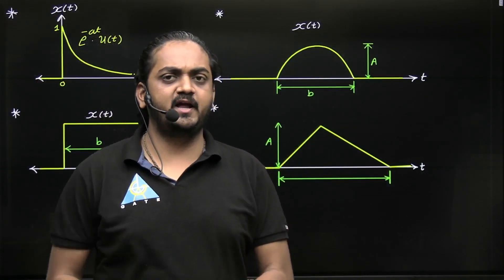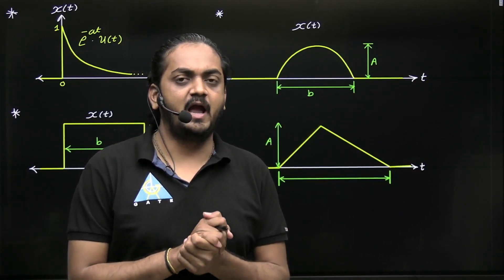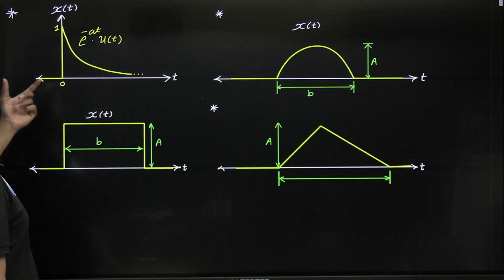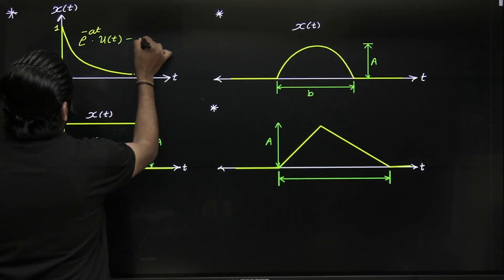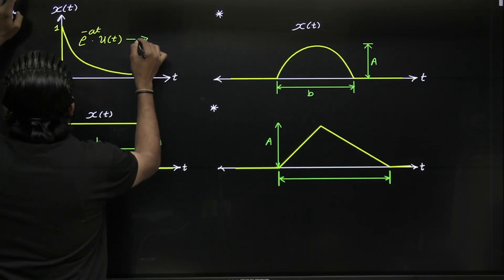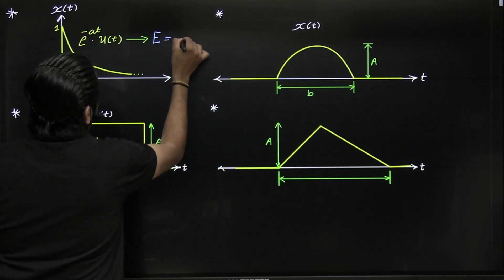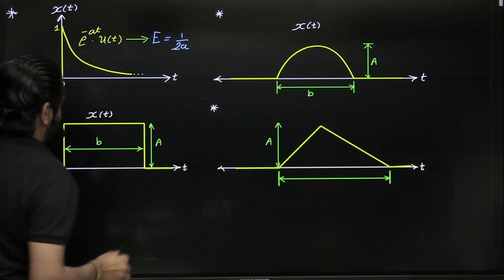Energy students, do you know there are important shortcuts to find energy of these signals? For example, suppose this is an exponential decaying function. Then it will be an energy signal, and its energy will be 1 over 2a.